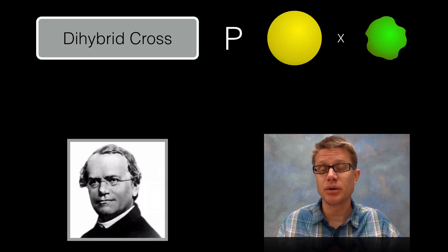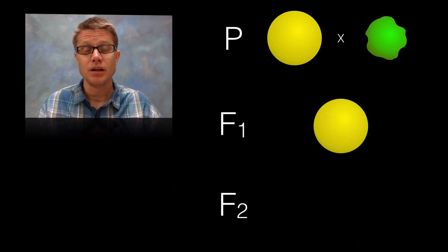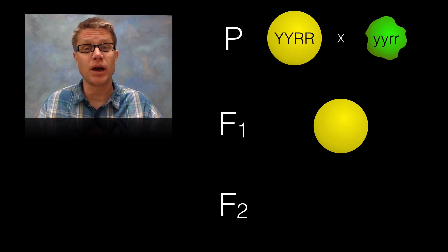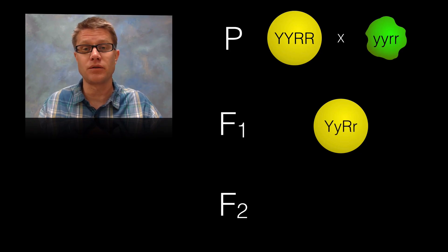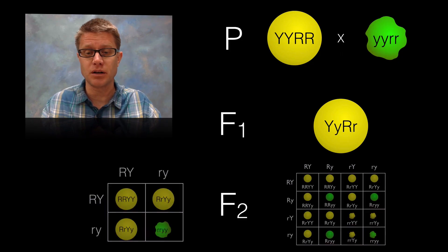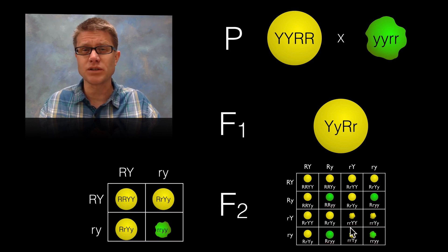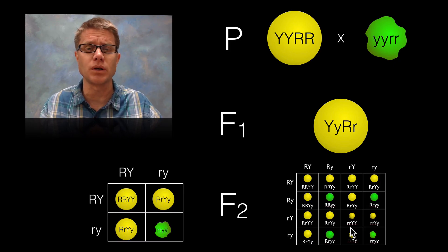Now let's look at a dihybrid cross. In this cross, Mendel crossed yellow round with green wrinkled, and found in the F1 generation that they were all yellow round — so yellow and round seemed to be dominant. Adding letters, the parents are homozygous yellow, round versus green, wrinkled, and the F1 generation is going to be hybrid for both. Now Mendel is presented with this problem: do those genes travel together? Are they dependent on one another or are they independent? Because those two alternatives could produce different possibilities — a Punnett square with only two possible phenotypes, or one with four possible phenotypes in different ratios. Let's go through the Morgan way and look at the chromosomes.